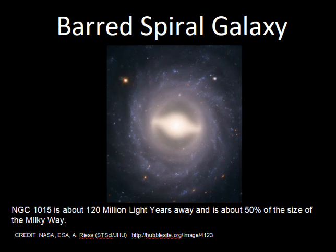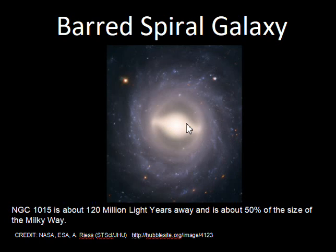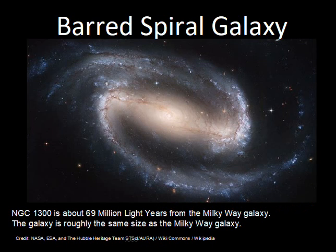The other type of spiral galaxies are barred spirals, where we have some type of rod or rectangular structure going through the core. This is not a drawing — this is a photograph of NGC 1015. In the barred spiral, the spiral arms don't go down to the nucleus of the galaxy; they are associated with the ends of the bar, as we can see better in NGC 1300.